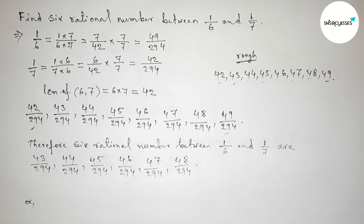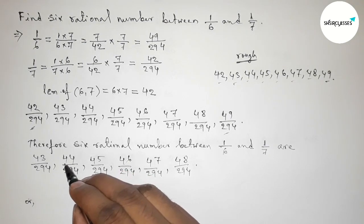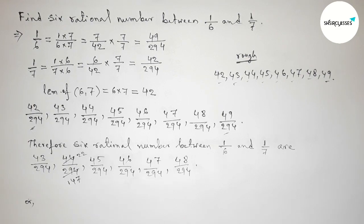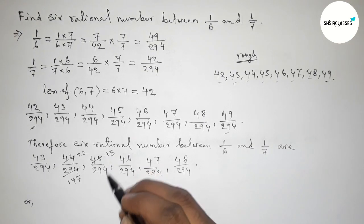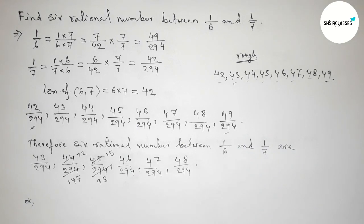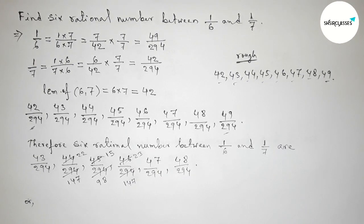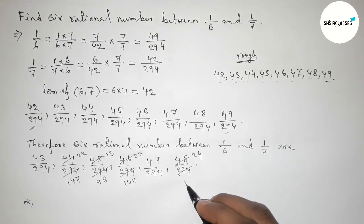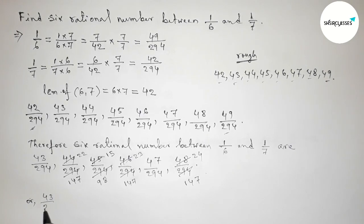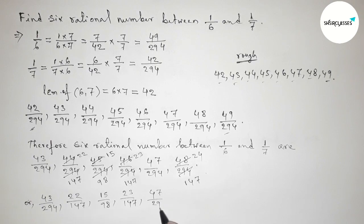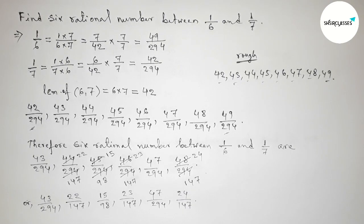We can also simplify these rational numbers. Dividing both numbers by 2: 44 by 294 becomes 22 by 147, and 48 by 294 becomes 24 by 147. Further simplifying: 43 by 294, 22 by 147, 15 by 98, 23 by 147, 47 by 294, and 24 by 147. That's all, thanks for watching.